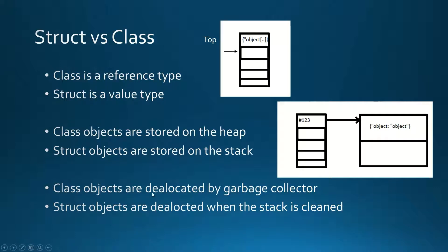Class objects are deallocated by the garbage collector and struct objects are deallocated when the stack is cleaned. Class objects are stored on the heap and the heap is cleaned up by the garbage collector automatically.